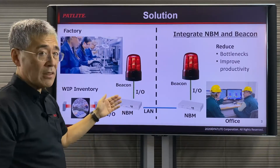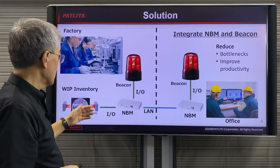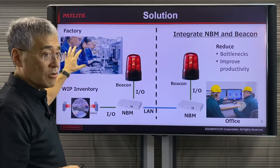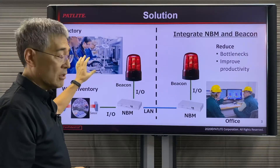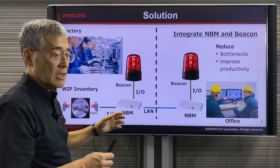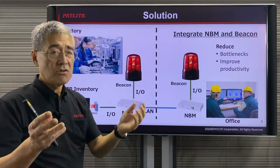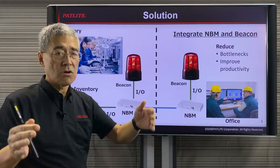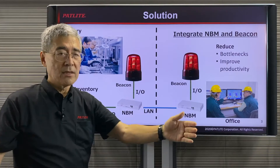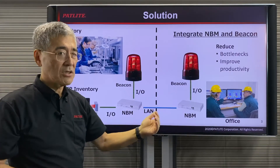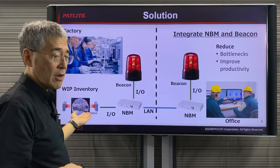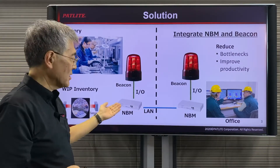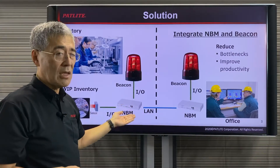The way this would work is that as product is being completed in one location, it will typically go into bins or go on a pallet, and a sensor could sense the presence of product there and send the signal to the NBM.